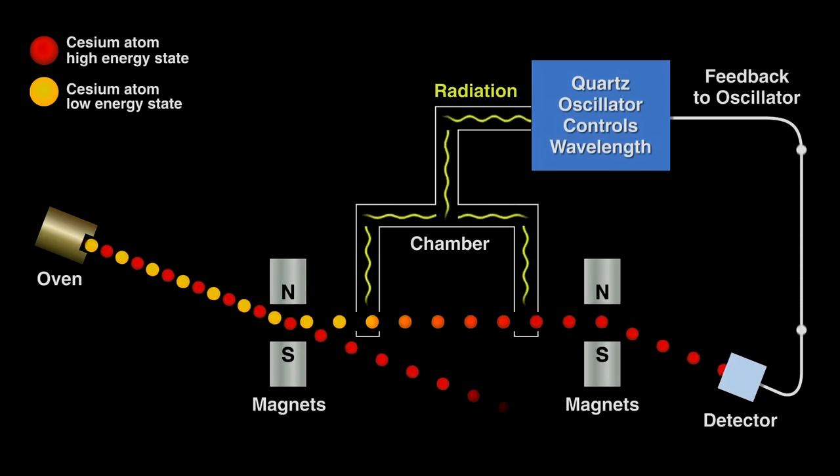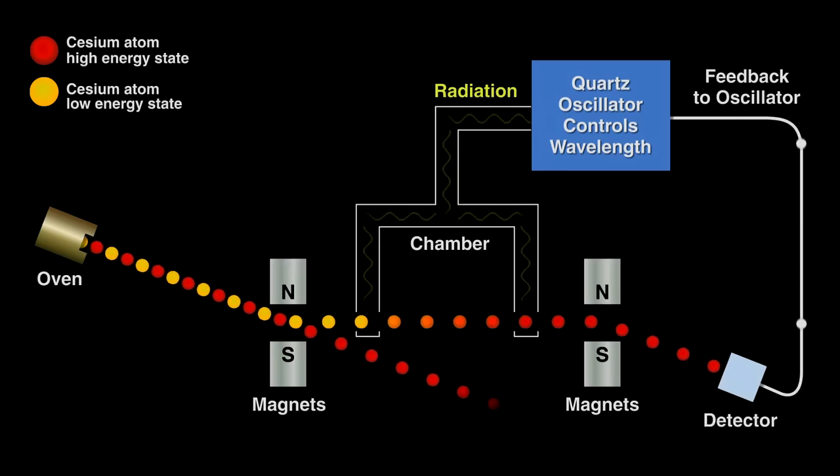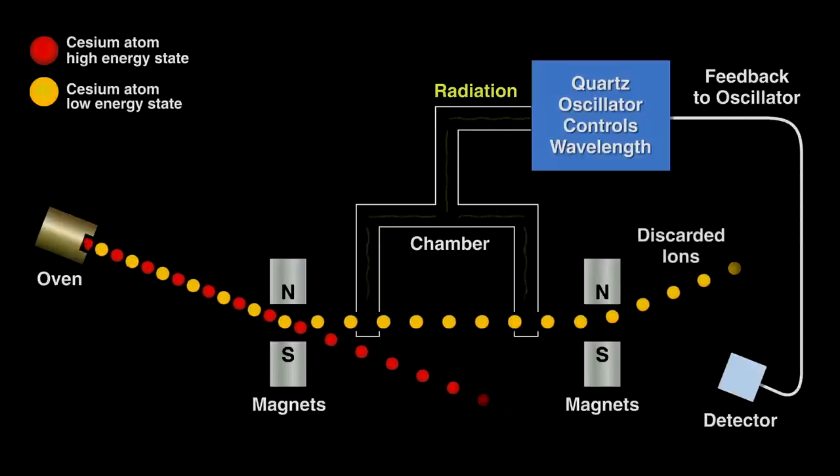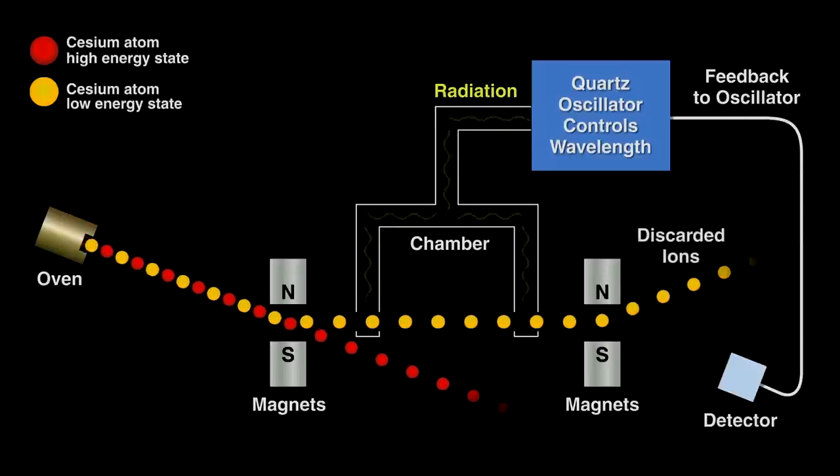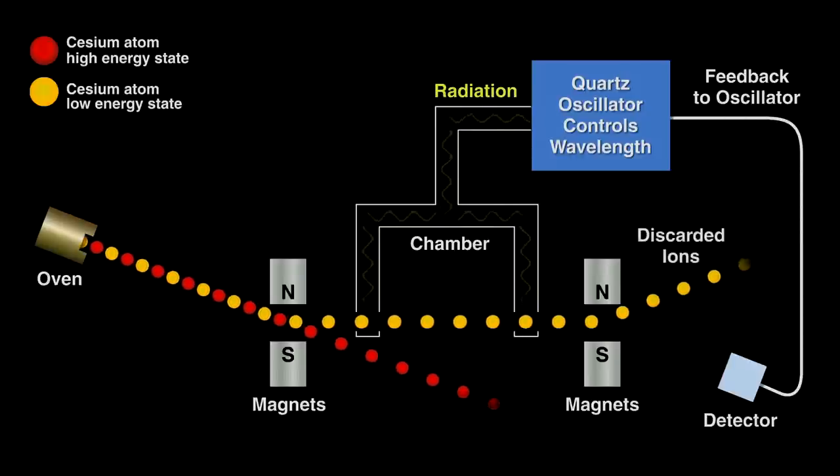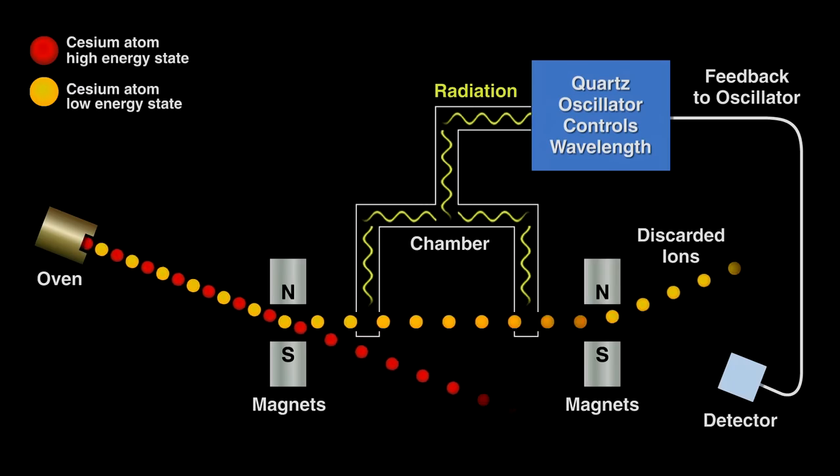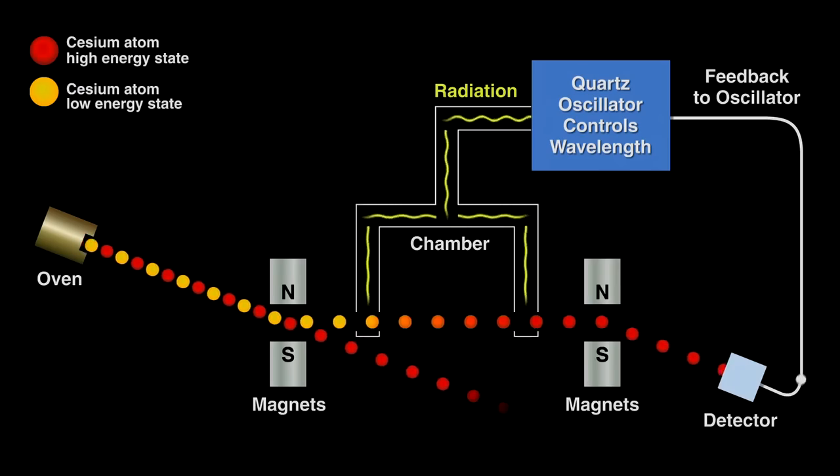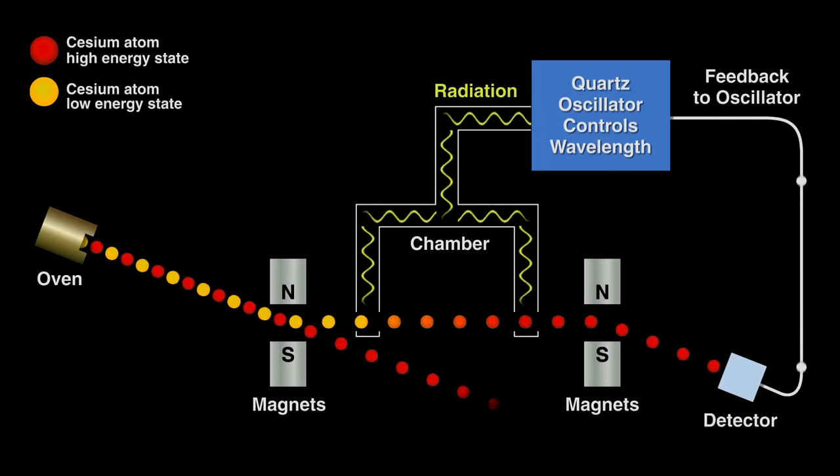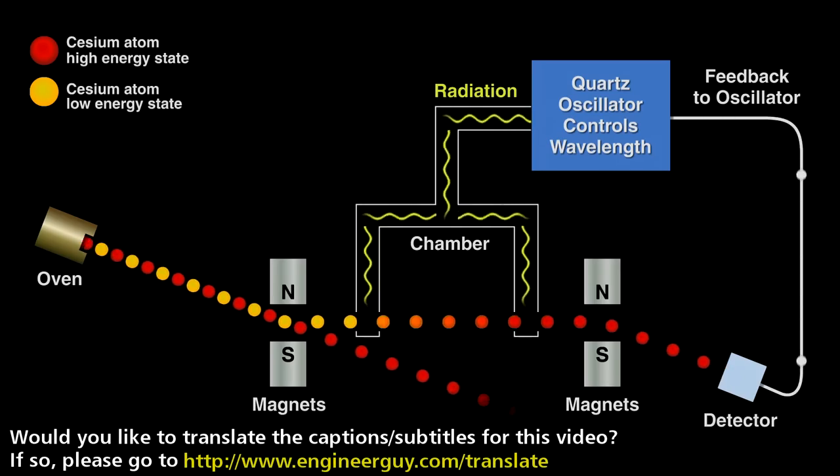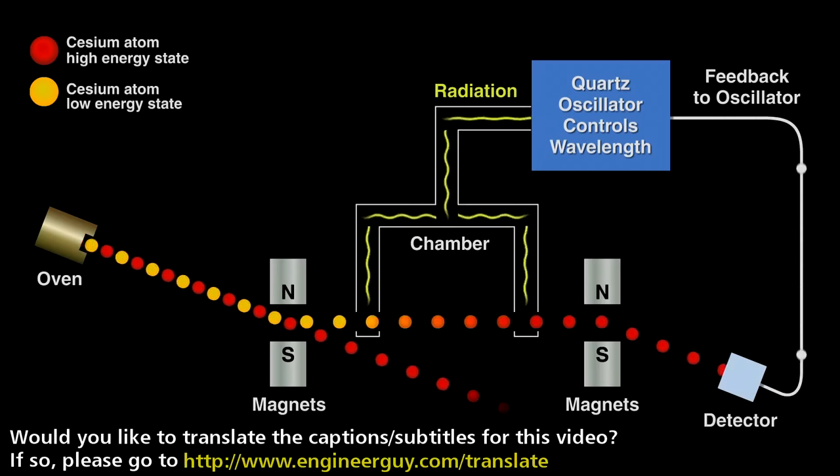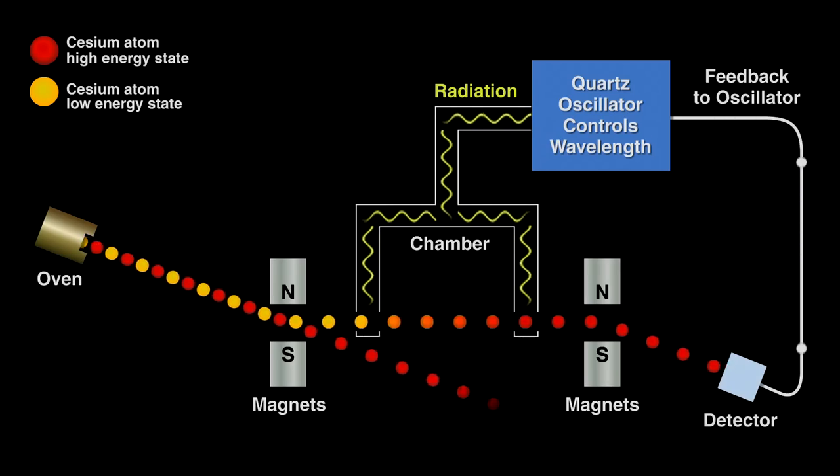When the quartz's oscillations decay, that is, it slows down a little, then the energy bombarding the cesium ions in the chamber changes and fewer high energy ions exit the chamber, so current decreases or stops. This tells the electronics to zap the quartz oscillator and correct the period of oscillation. It does this by applying the proper voltage that, via the piezoelectric effect, taps the quartz and restores its oscillations, thus creating a clock that loses less than a second over many million years.